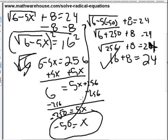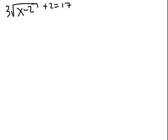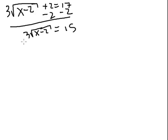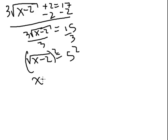So, just to reiterate, isolate that radical before you square it. Let's up the ante a little. Try a slightly harder problem. 3 times the square root of x minus 2 plus 2 equals 17. Hopefully, by now, you know we need to try to isolate this radical. 3 times the root of x minus 2 equals 15. And let's divide both sides by 3. The square root of x minus 2 equals 5. And now you know the deal. Square both sides. And we end up with x minus 2 equals 25. Add 2 to both sides and x equals 27.